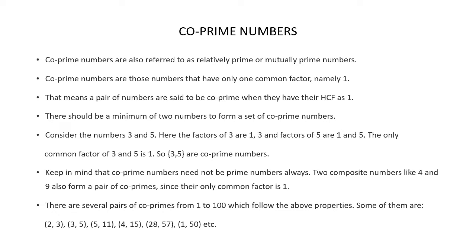You have to keep in mind that co-prime numbers need not be prime numbers always. Consider these two numbers 4 and 9. They are composite numbers, but they also form a pair of co-primes. Because the factors of 4 are 1, 2, and 4, and the factors of 9 are 1, 3, and 9. So the common factor of 4 and 9 is 1, making them co-prime numbers.